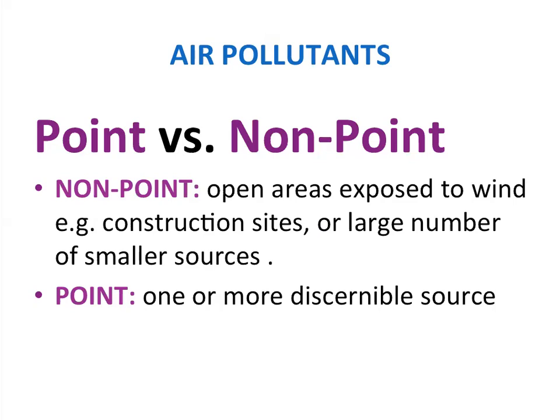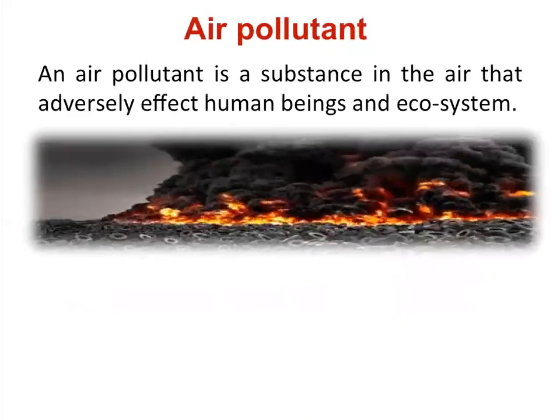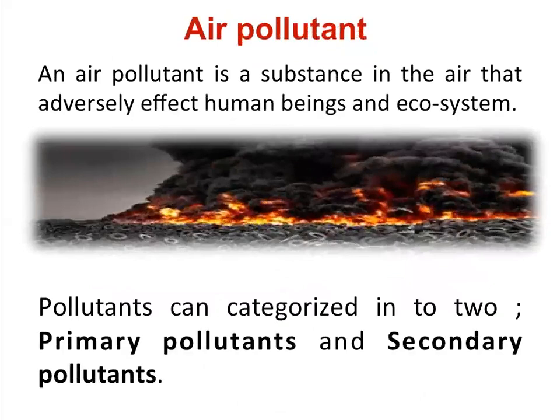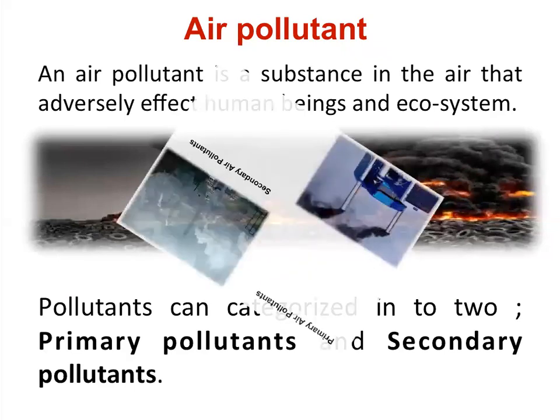A point source of pollution is a single identifiable source of air, water, thermal, noise, or light pollution. A point source has a negligible extent, distinguishing it from other pollution sources such as non-point sources. Air pollutants are substances in the air that adversely affect human beings and ecosystems. They can be categorized into two types: primary pollutants and secondary pollutants.